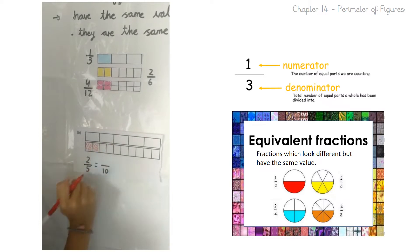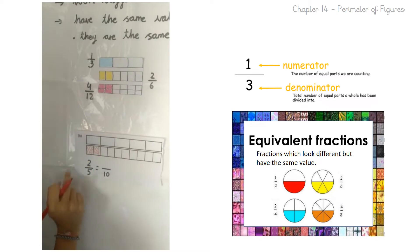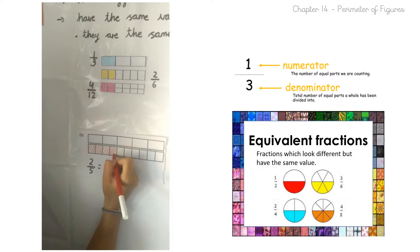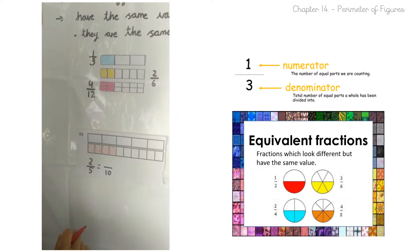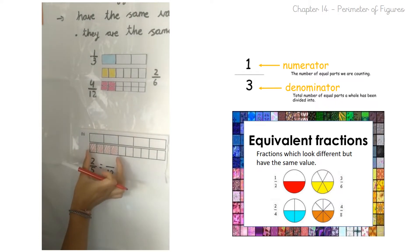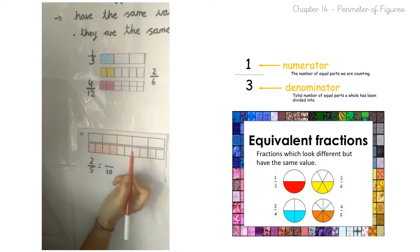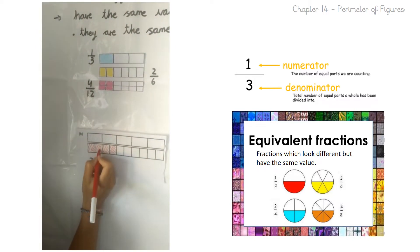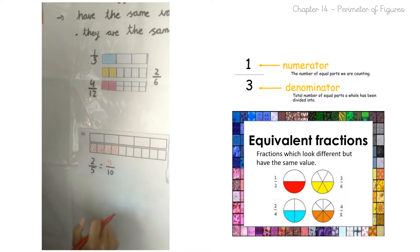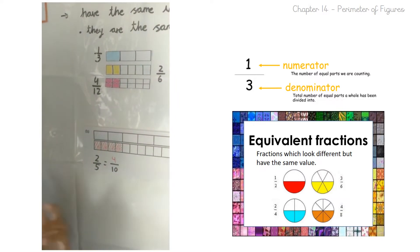Do they have the same value? No. We can see that this one is smaller than two fifths. Let's keep going. Do I need to keep going? No, you're right. Now both of my fractions have the same value because they take up exactly the same amount of space. So my numerator is going to be one, two, three, four — four out of ten. And we can say that two fifths is equivalent to four tenths.